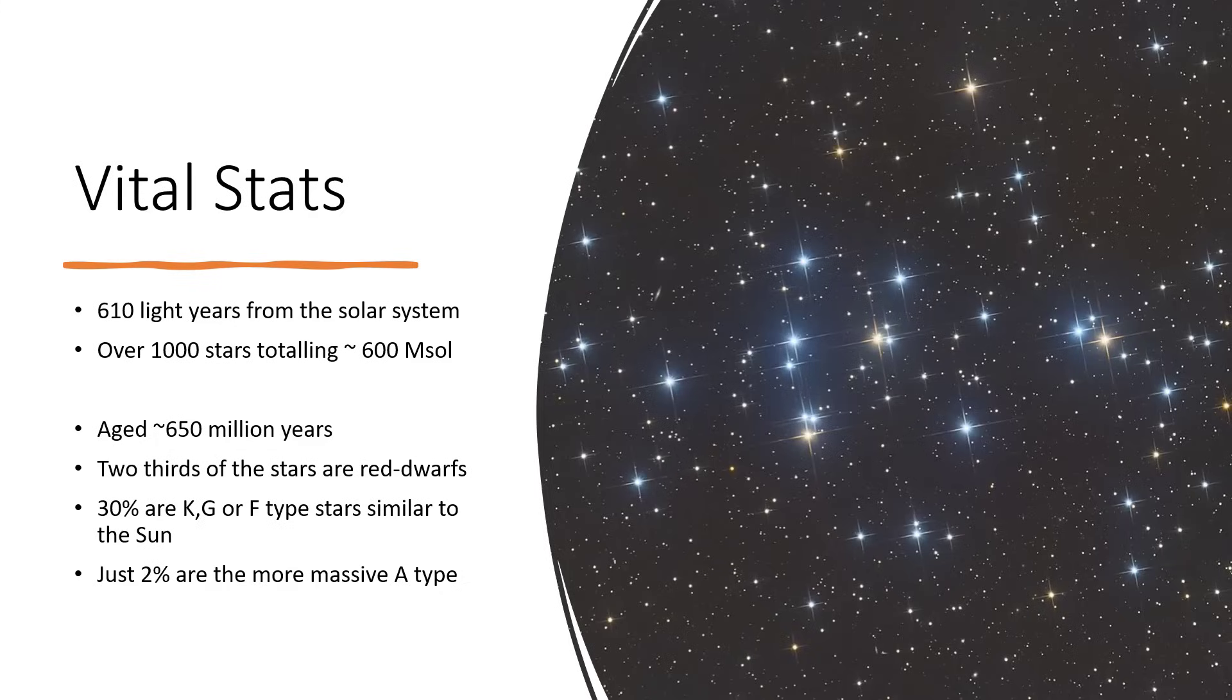30 percent of them are the sun-like stars - the late K orange stars, G stars, and F stars. Just 2 percent tip over into the slightly more massive A-type category, and there are none that are more massive than about two solar masses in the entire cluster.